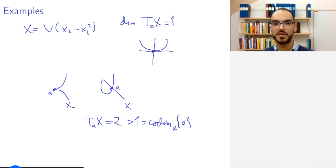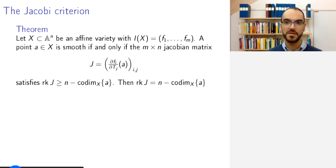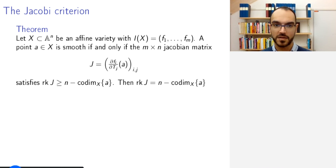So now the question is, is there a quick way, without drawing pictures and without guessing, to check whether or not a point is smooth? And there is, it is the Jacobi criterion that should be quite familiar from calculus. So remember again that it is enough to consider the affine case because we can always reduce to an affine open set containing our points to check for smoothness.